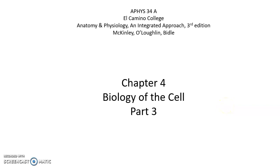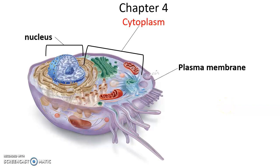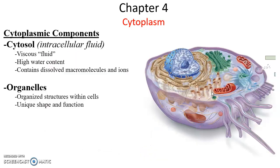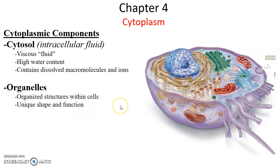Chapter four, biology of the cell, part three. We are now moving from the plasma membrane to the cytoplasm, which is everything between the nucleus and the plasma membrane. This includes the fluid called the cytosol. The cytosol has a high water content but is still a very viscous fluid, sort of like a gel, similar to toothpaste. It has many dissolved macromolecules and ions within it. Also found in the cytosol are the organelles — organized structures with unique shapes and special functions.